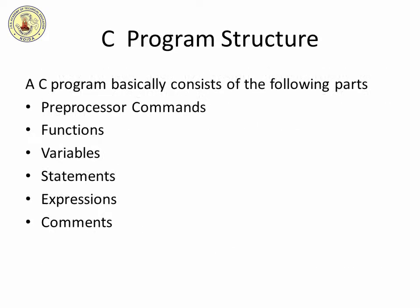Before we study the basic building blocks of the C programming language, let us look at a bare minimum C program structure so that we can take it as a reference in the upcoming tutorials. A C language program basically consists of the following parts: pre-processor commands, functions, variables, statements, expressions, and comments.